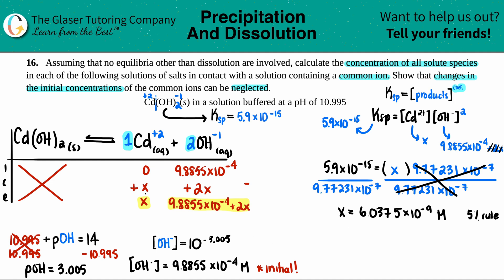And now we need to calculate those concentrations. So we just go back to the equilibrium line. Keep in mind that the cadmium was just the x value, so that's the 6.0375 times 10 to the negative 9th molarity. And then when we do the hydroxide, it was the 9.8855 times 10 to the negative 4th plus 2 times that x value. So when we do the math, we just have to plug it in: 9.8855 times 10 to the negative 4th plus 2 times 6.0375 times 10 to the negative 9th. Is it even going to move it? Yeah. 9.8856 times 10 to the negative 4th molarity.